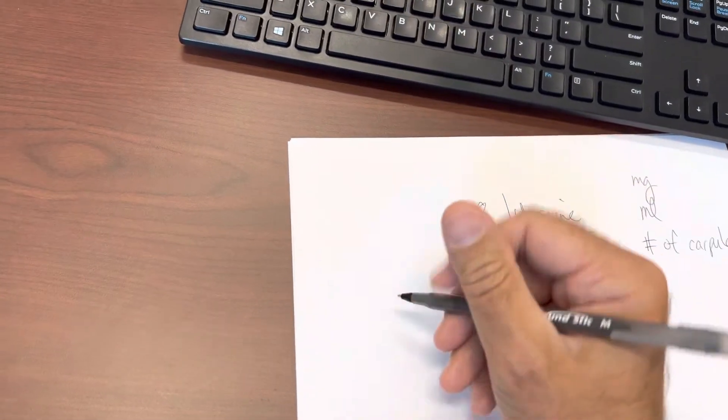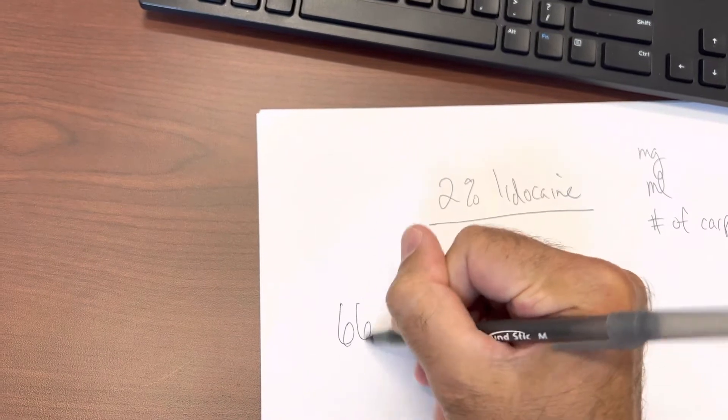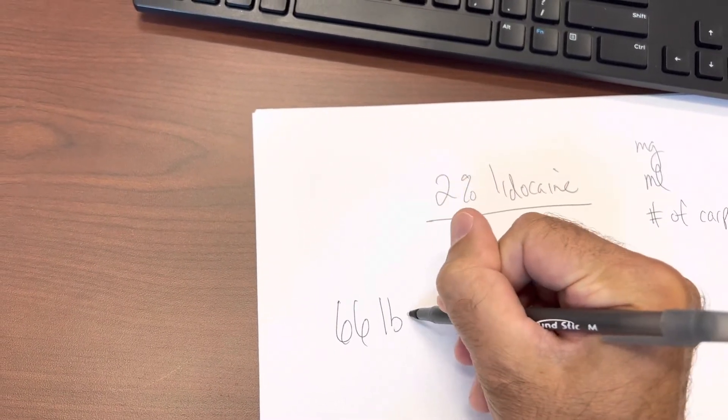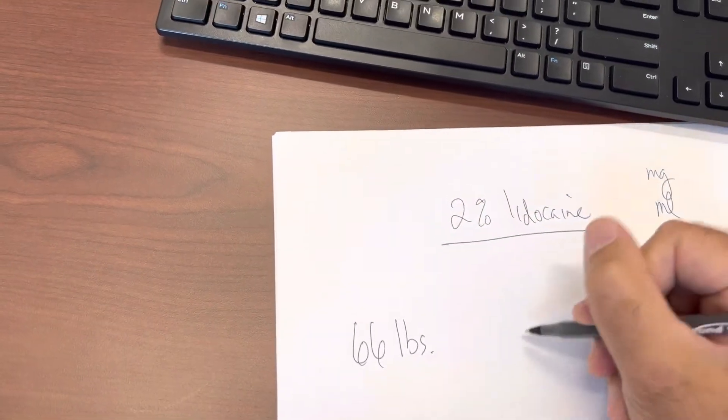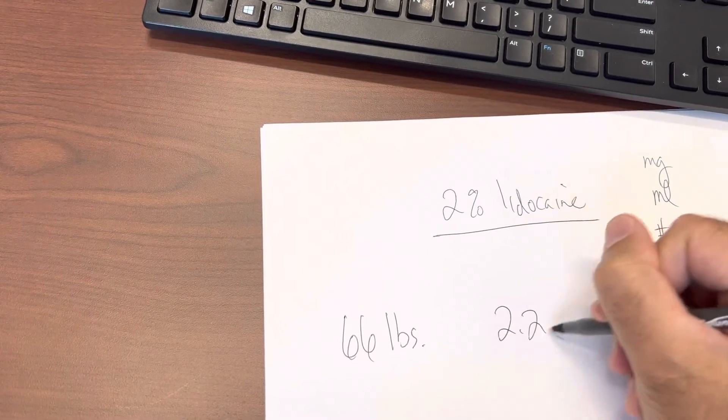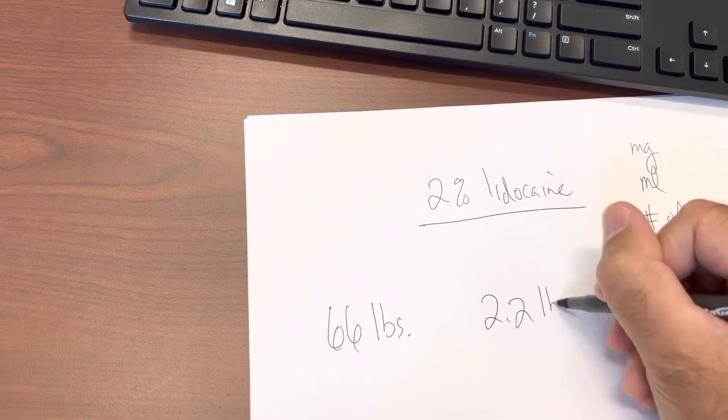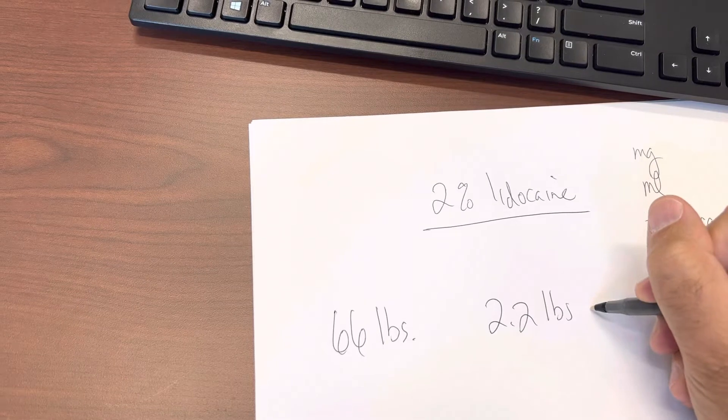So for the sake of this example, we're going to start with the 66 pound child. We know that there are 2.2 pounds per kilogram.